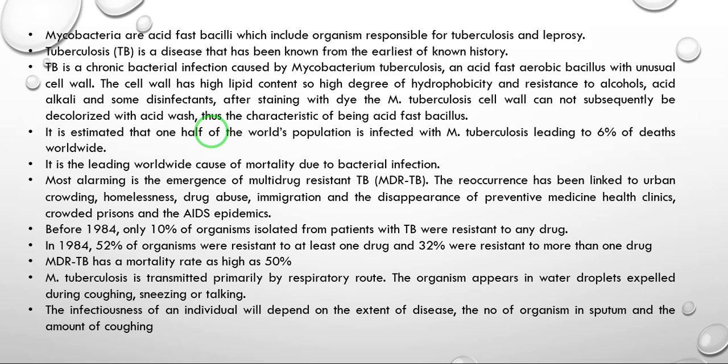Before 1984, only 10% of organisms isolated from TB patients were resistant to any drug. By 1984, 52% of organisms were resistant to at least one drug, and 32% were resistant to more than one drug. MDR-TB has a mortality rate of around 50%.